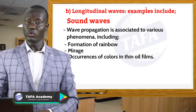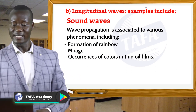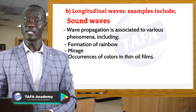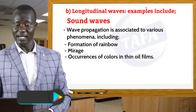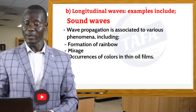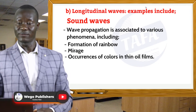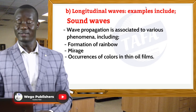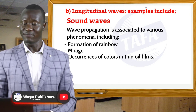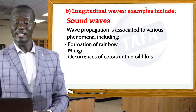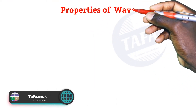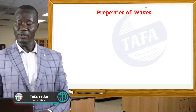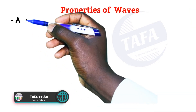In Form 2 you discussed the characteristics of wave motion and looked at concepts like wavelength, the period of the wave, and the velocity of the wave. Our interest at this level is to look at the properties of waves, and these properties are very important.